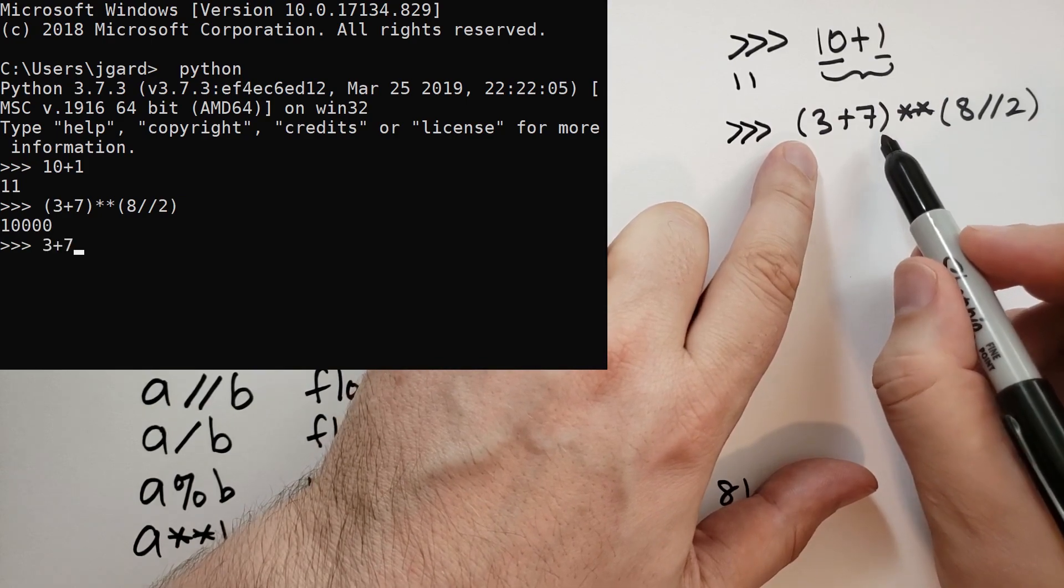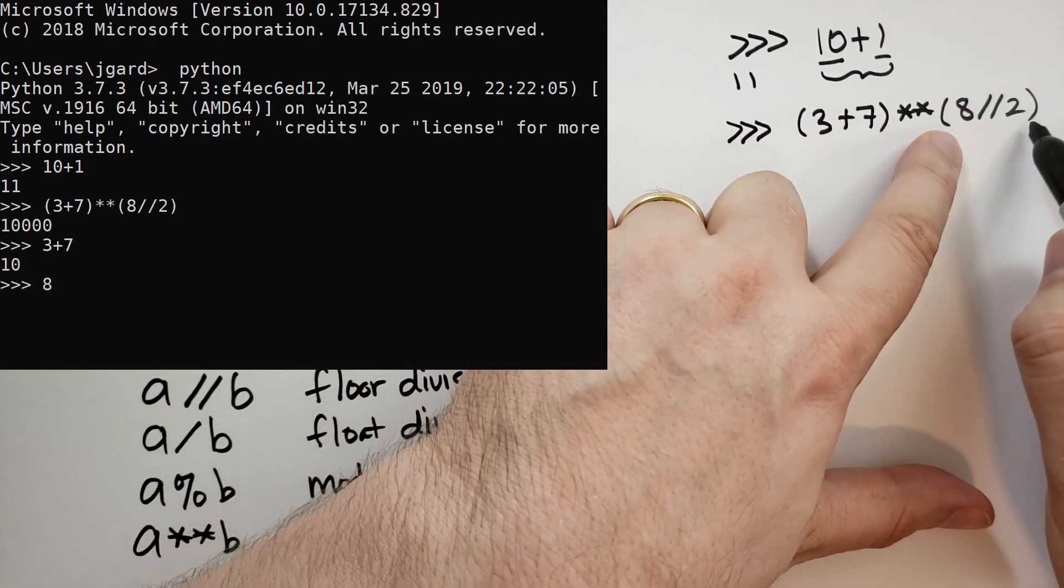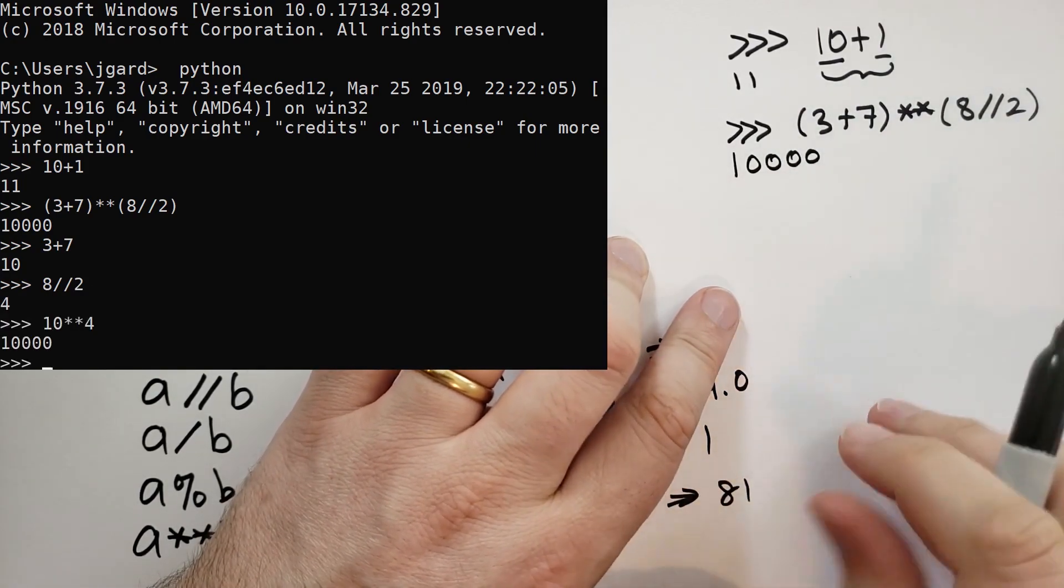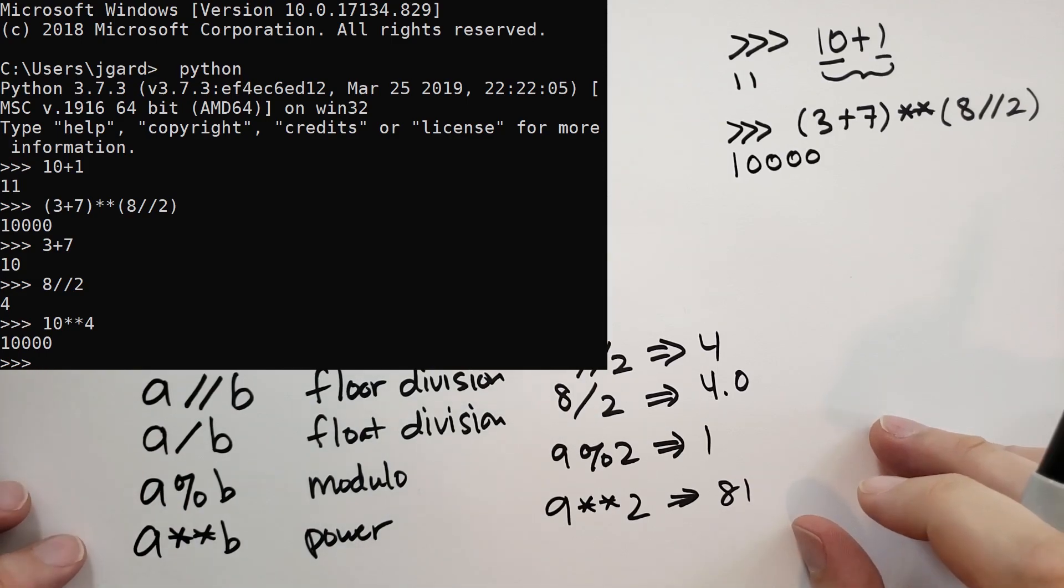First, it adds 3 and 7 together. Then it takes 8 divided by 2, which is 4. So we have 10 raised to the power of 4. That should give you 10,000.